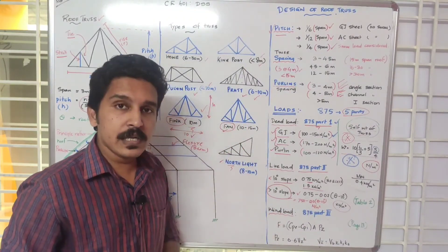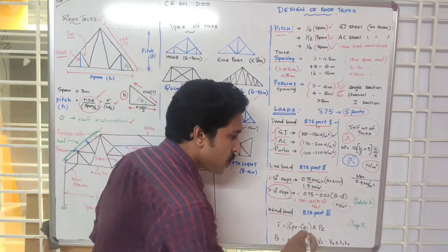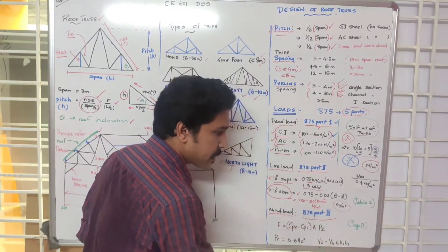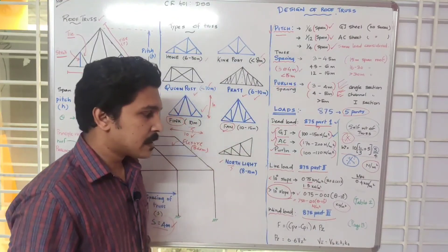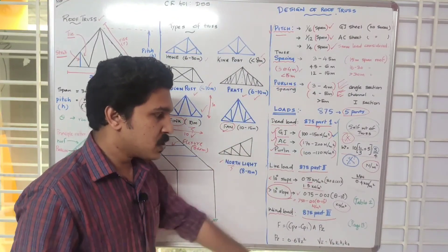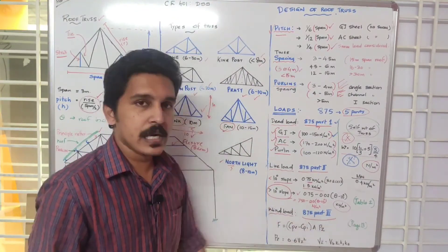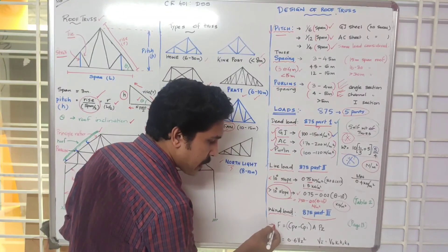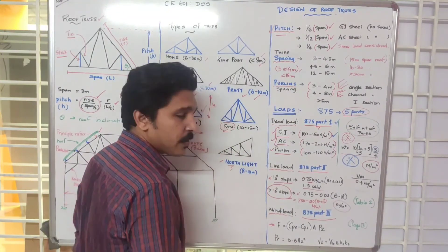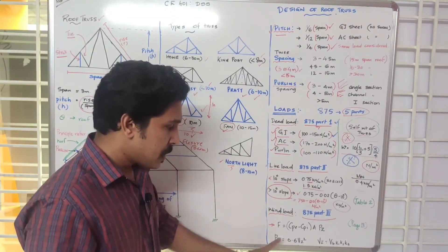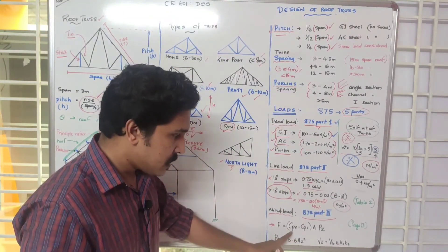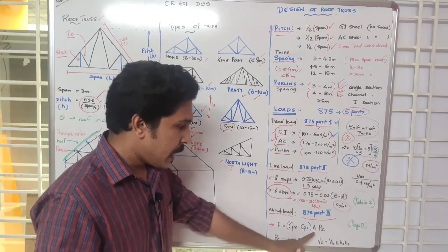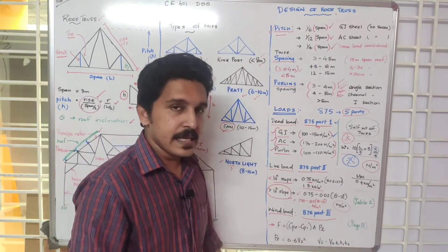The third load is the wind load, calculated as per IS 875 Part 3. Going to page 13, the wind force equation is: F = (Cpe minus Cpi) × Area × Pz, where Pz is the design wind pressure, Cpe is the external pressure coefficient, and Cpi is the internal pressure coefficient. This will be discussed further.